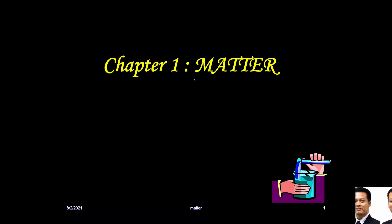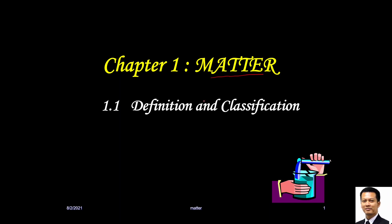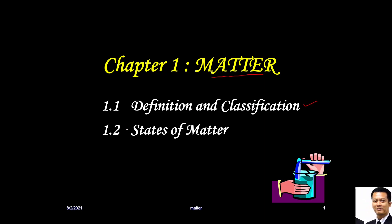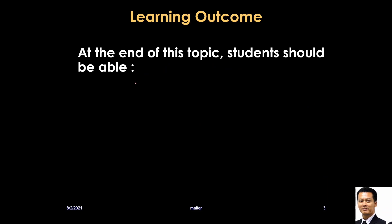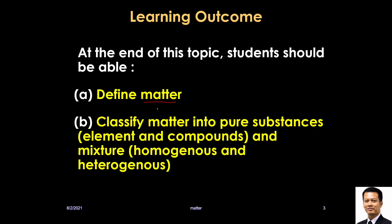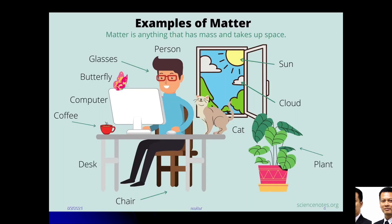Assalamualaikum and good morning. Today we are going to study Chapter 1: Matter. Section 1.1 is about definition and classification, and 1.2 is about states of matter. At the end of this topic, you should be able to define what is matter, classify matter into pure substance, element and compound, and mixture — homogeneous and heterogeneous mixture.